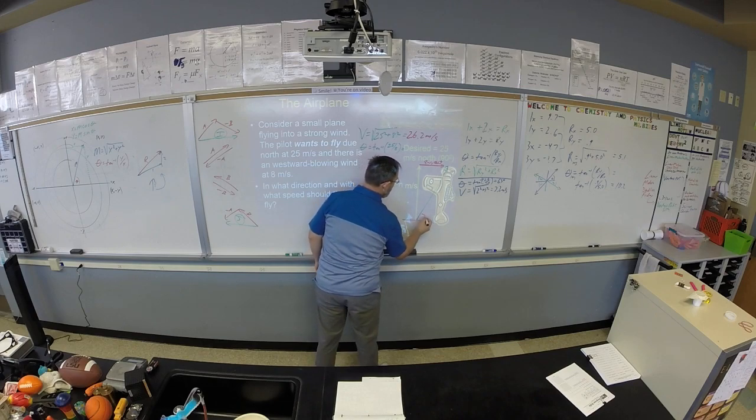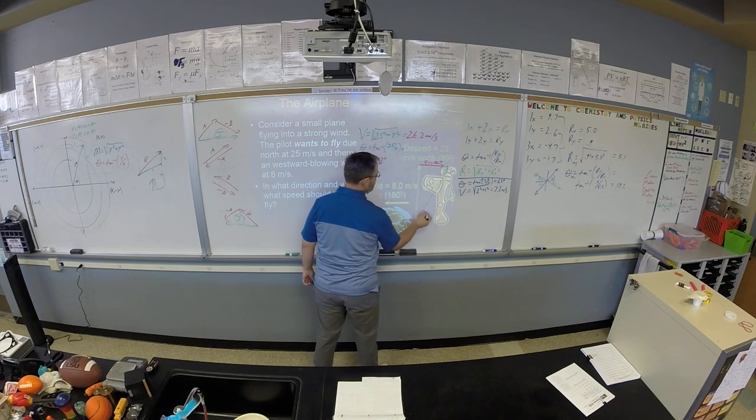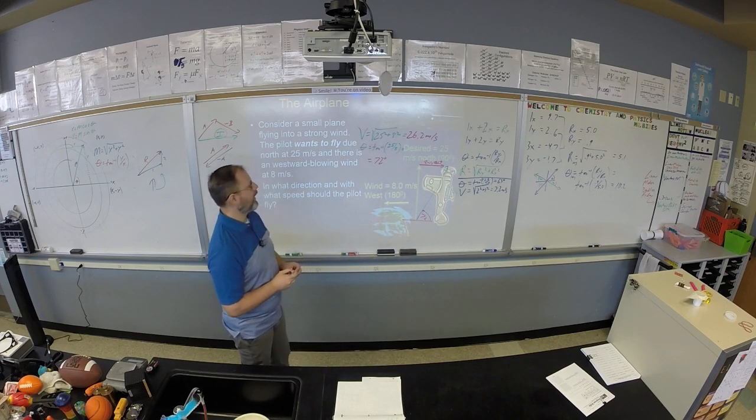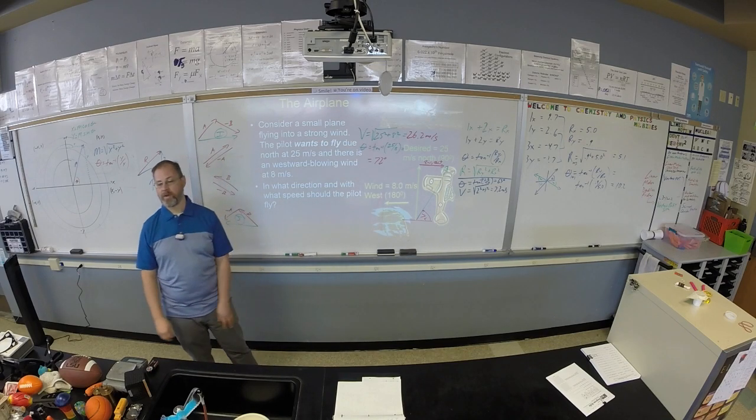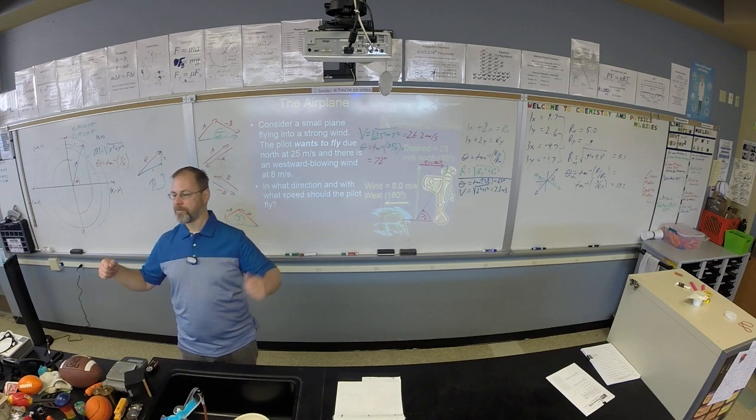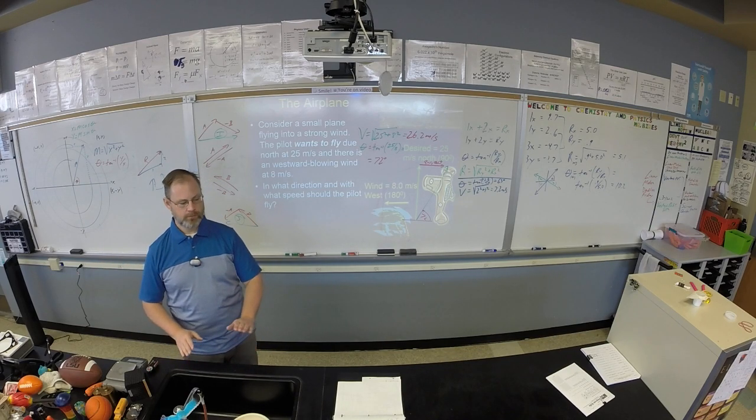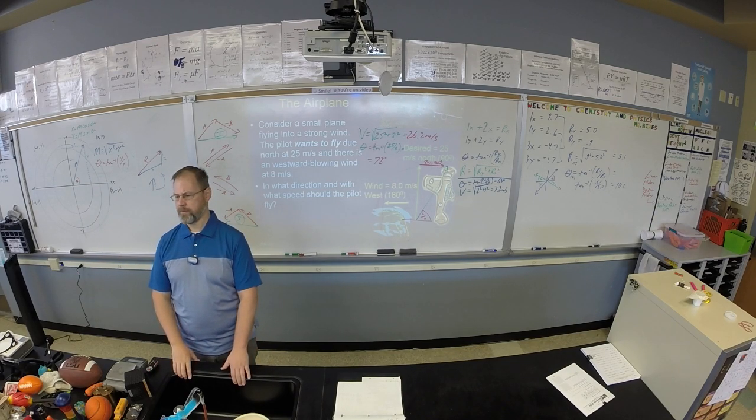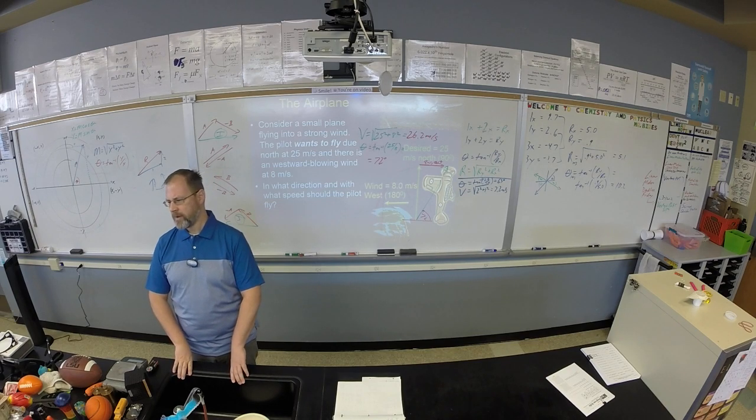So again, and luckily the calculator tells us that's 72 degrees right there. So 72 degrees, or 26.2 at 72 degrees is how you should point your plane and with what velocity so you can cancel out your wind. How are we doing with this stuff? We're good with vectors? Okay.